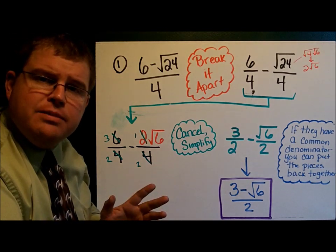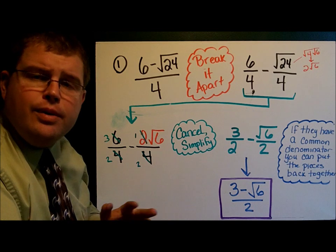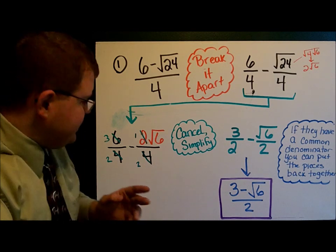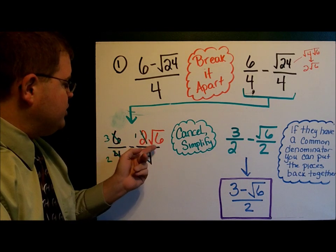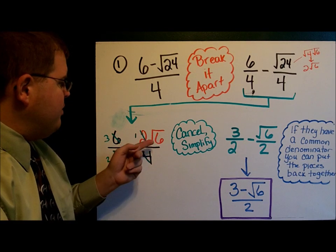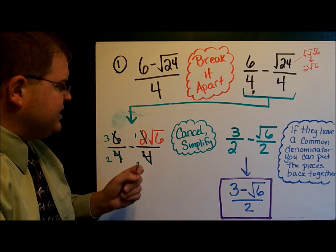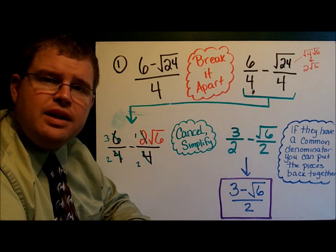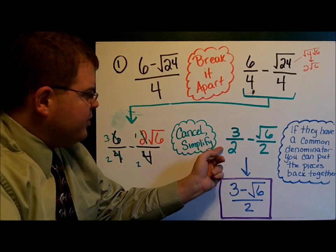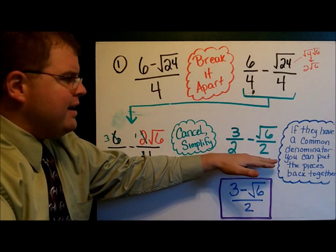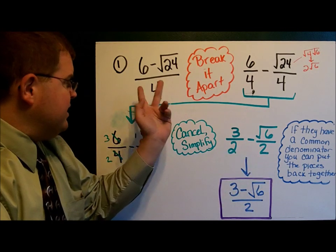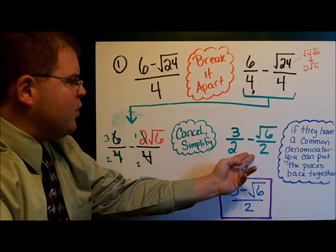Finally, once you've simplified your square root, you can go ahead and reduce the fractions. 6 over 4 becomes 3 over 2. 2 square roots of 6 over 4 becomes 1 square root of 6 over 2. That gives me 3 over 2 minus the square root of 6 over 2. And this, written right here in green, is this in simplest form.